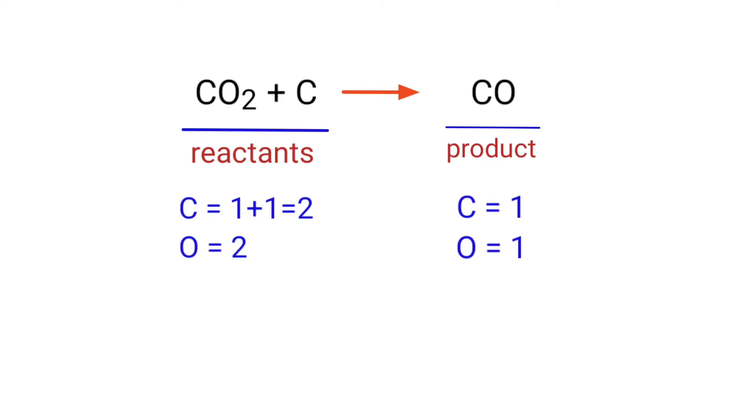On the reactants side there are two carbon atoms and two oxygen atoms present. On the product side there are one carbon atom and one oxygen atom present. The number of atoms are not balanced on both sides.